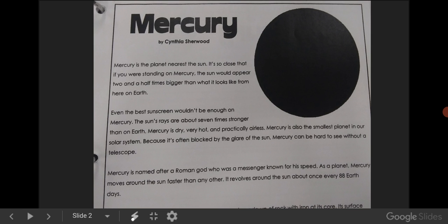Because it's often blocked by the glare of the Sun, Mercury can be hard to see without a telescope. Mercury is named after a Roman god who was a messenger known for his speed. As a planet, Mercury moves around the Sun faster than any other. It revolves around the Sun about once every 88 Earth days.